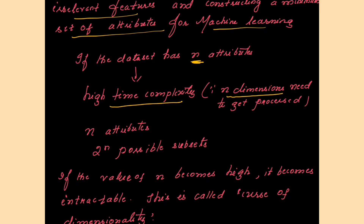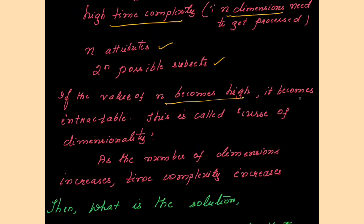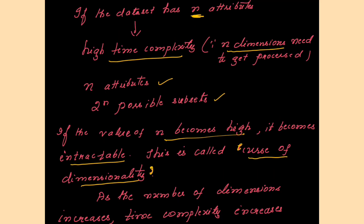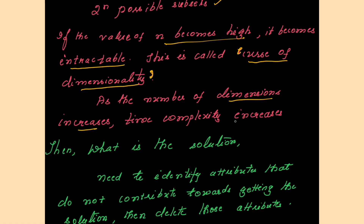With n attributes, the possible subsets will be 2 to the power of n. So if the value of n becomes high, it becomes intractable — not possible to solve, manage, or control. This is called the curse of dimensionality. When the number of attributes in the data set becomes very high, it becomes difficult to solve, manage, or control, and as the number of dimensions increases, time complexity increases.